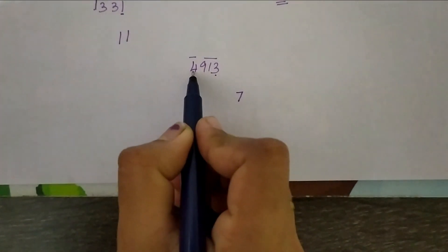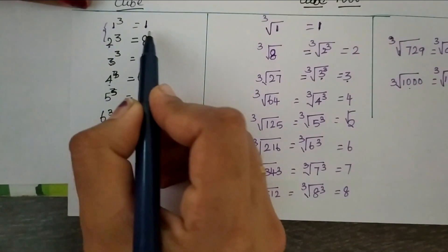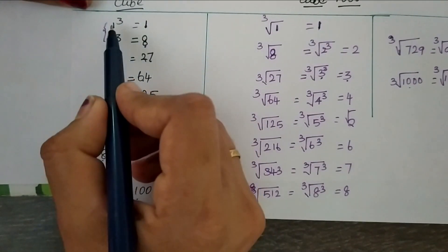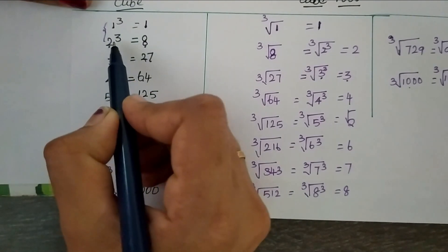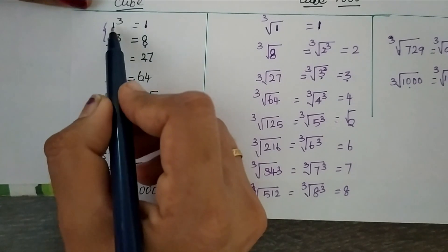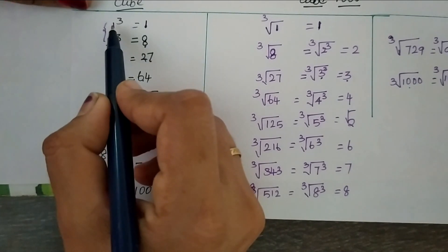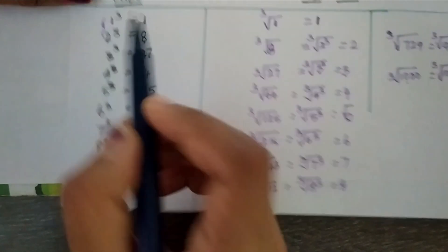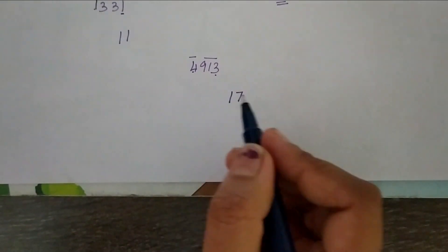Next we have number 4. Here we check this number 4 lies between 1 and 8, which means between 1 cube and 2 cube. We have to take the smallest number among these two numbers. Here 1 is the smallest number. So, 17 is the cube root of this number.